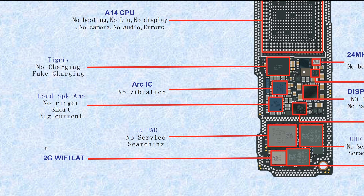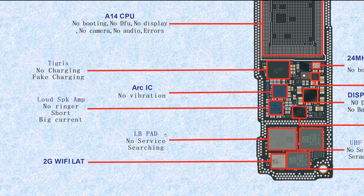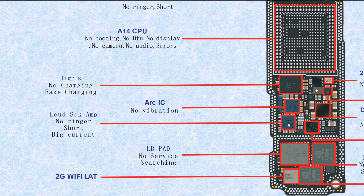This one is the 2G WiFi LAT — LAT means Low Antenna — so this is the low antenna for 2G WiFi. If broken, it causes no 2G WiFi. This one is the LPLBPAD — Low Band Power Amplifier. If broken, it causes no service or searching.